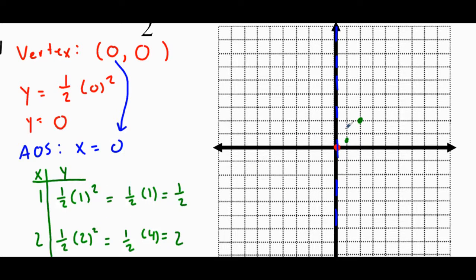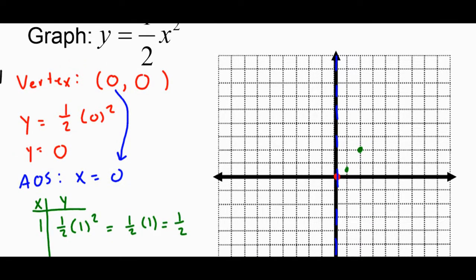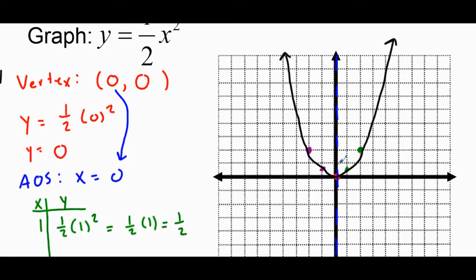Step 3: I'm going to reflect these points across the axis of symmetry. For the point that is 1 away from the axis, I go 1 away on the other side. For the point that is 2 away, I go 2 away on the other side. You'll notice these make the U shape of a parabola. I connect them going down — try to make it curved at the vertex. There's our parabola. Computers can do this a little smoother, but you need the general idea of how it works.